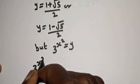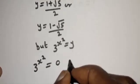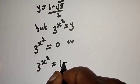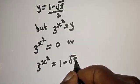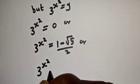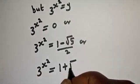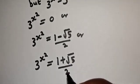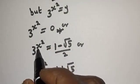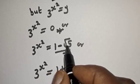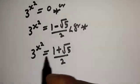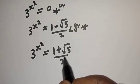So y equals 1 plus square root of 5 over 2, or y equals 1 minus square root of 5 over 2. Now, 3 raised to power x squared cannot equal 0 — that case is not valid. And 1 minus square root of 5 over 2 is less than 0, so it's also not a real solution. The only real solution is 3 raised to power x squared equals 1 plus square root of 5, over 2.